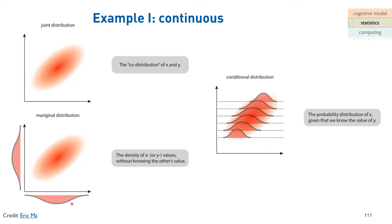The conditional distribution for continuous events means fixing one outcome and looking at how the other dimension varies. For instance, given a fixed value on the Y-axis (a dotted line), we observe how the X-axis is distributed. As we change the condition — moving from one Y-value to another — the X distribution changes accordingly. So in summary: joint, marginal, and conditional distributions apply to both discrete and continuous events.